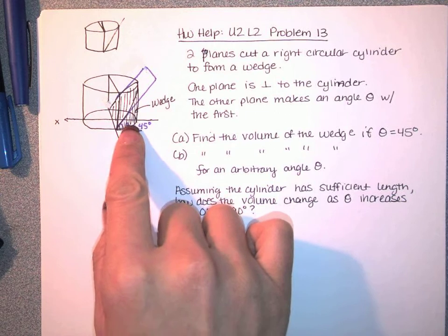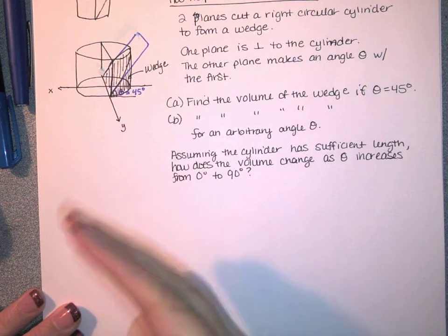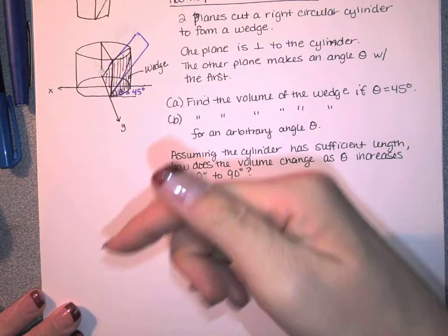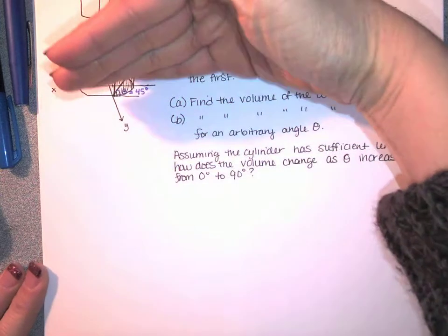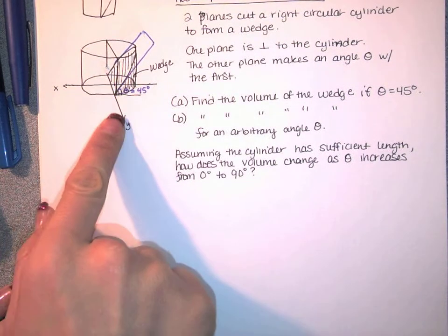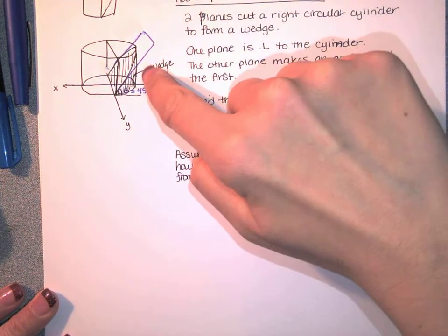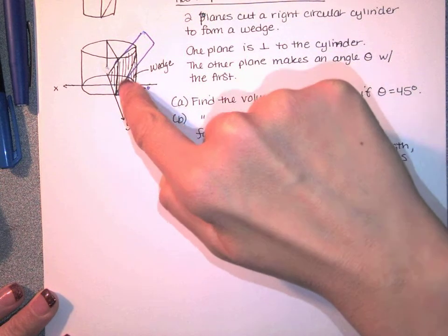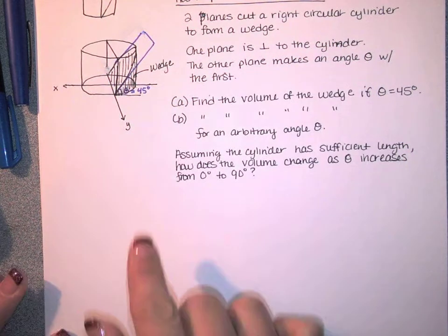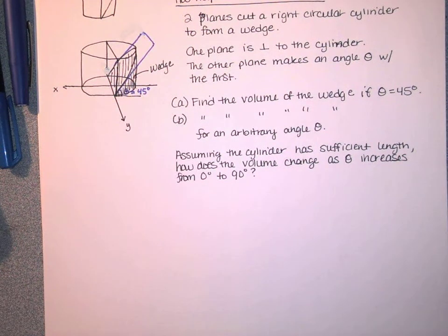We're asked to find the volume of the wedge if the angle is 45 degrees. This section is about solids with known cross sections. If we slice perpendicular to the y-axis, all those slices sitting on top of this semicircular region are going to be triangles. So this is actually a volume of a solid with known cross-sections whose cross-sections are triangles.